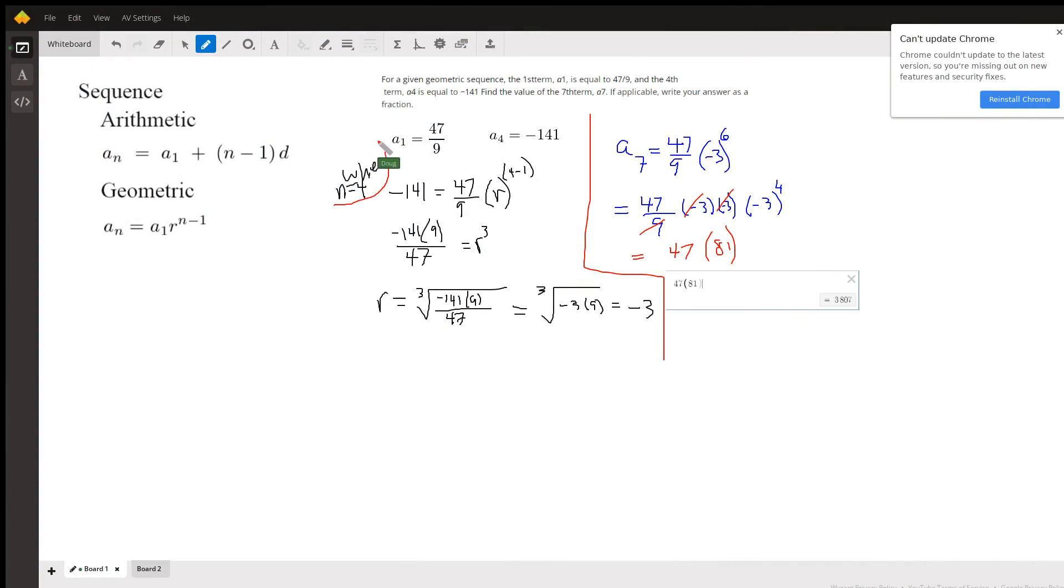Okay, we're told we have a geometric sequence where the first term is 47 ninths, the fourth term is negative 141, and we're supposed to find the seventh term.